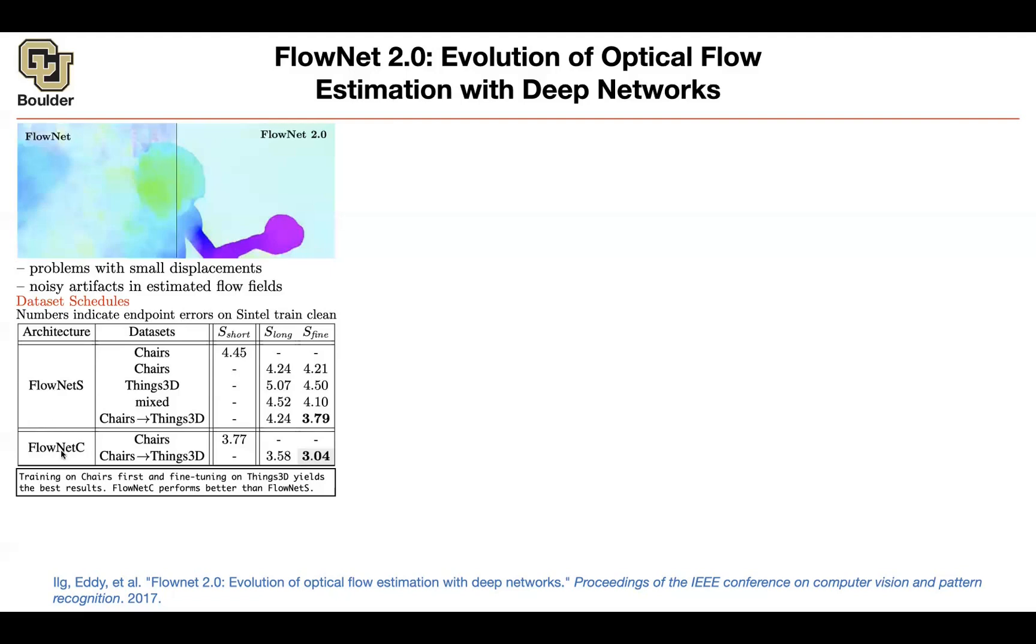The other solution is FlowNet C architecture. I didn't explain it in the previous paper. I'm going to explain it here. This one is more costly. The architecture is more costly. But then it's doing much better. So these are the two observations. One is training on chair, fine-tuning on things 3D helps. The other one is FlowNet C is a better architecture. It's more expensive, though, but it's giving the better numbers.